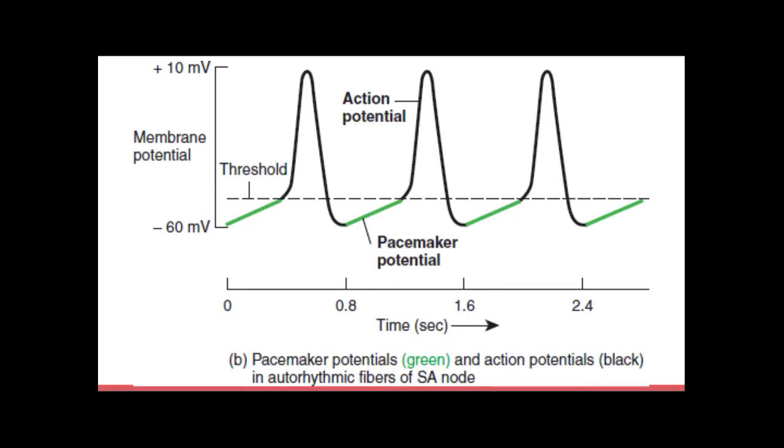So the pacemaker potential can trigger an action potential. And each action potential from the SA node propagates through both of the atria using gap junctions in the intercalated discs of the atrial muscle fibers. So after the action potential, the two atria are able to contract at the same time, all from generation of action potentials from the SA node.